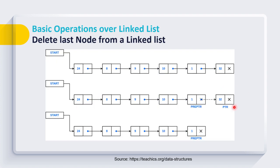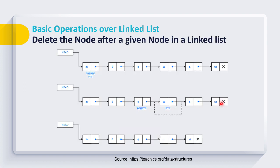We can also remove a node from the end of a linked list by simply modifying the pointer of the second-to-last node. Earlier it was pointing to the last node but it will be updated to null, and this way we can delete the last node. We can also delete any particular node from the linked list by modifying the appropriate pointers.